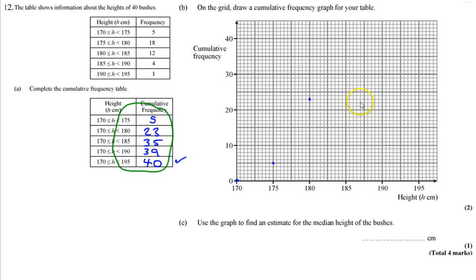I've now got 35 next to 185. 39 with less than 190. And 40 with less than 195. That's going to go there. And I get this S shape here that I'm now going to try and draw a smooth curve going through this.